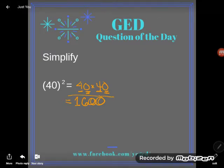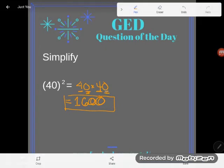1600 is the correct answer here. If you have any questions about this or any other GED math topic, be sure to drop it in the comments and I'll do my best to answer it.